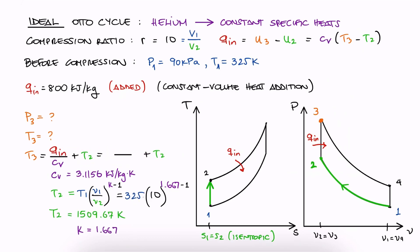And with it, we substitute the T2 value, Q in, and Cv to find the temperature at the end of the heat addition process.